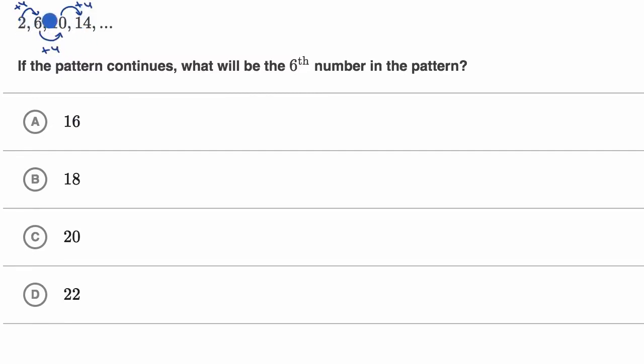And this is the first one, two, three, four numbers in the pattern. So the fifth number in the pattern is going to be 14 plus four, which is going to be 18, and then the sixth number in the pattern is going to be 18 plus four, which is 22, and that's what they want. They want the sixth number in the pattern. So 22 is choice D.